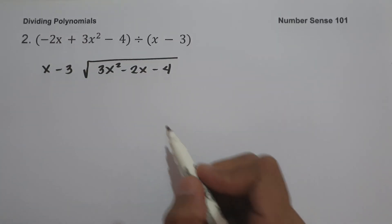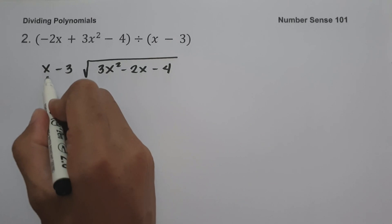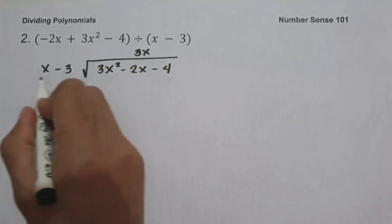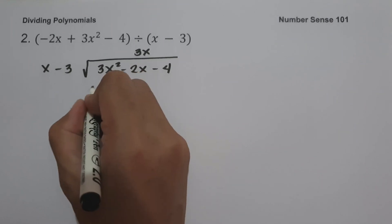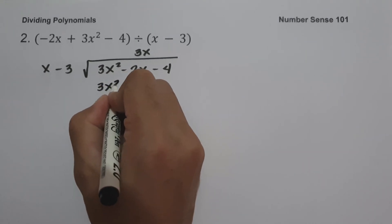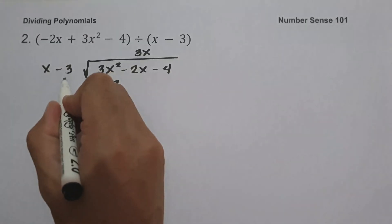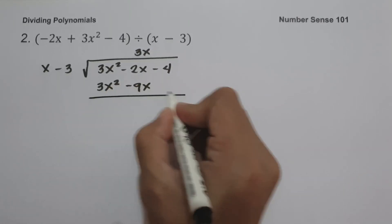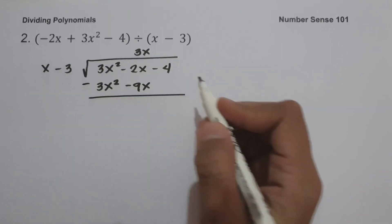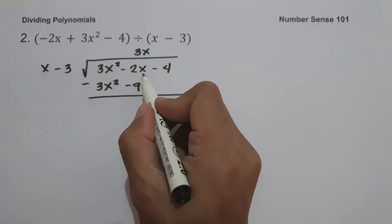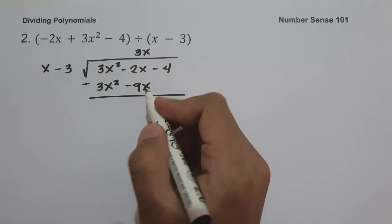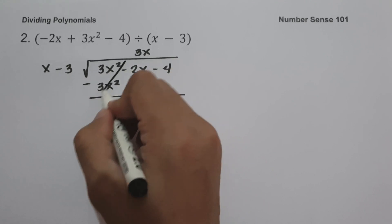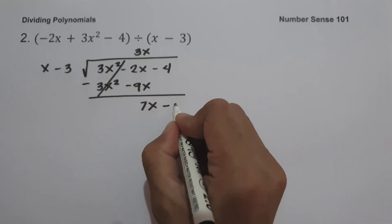So let us have 3x squared divided by x, which is 3x. Then 3x multiplied by x is 3x squared, and 3x multiplied by negative 3 is negative 9x. So let us subtract: negative 2x minus negative 9x gives us positive 7x. And let us cancel this one.